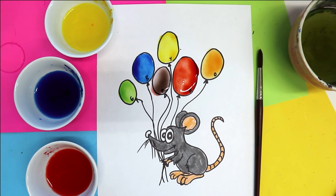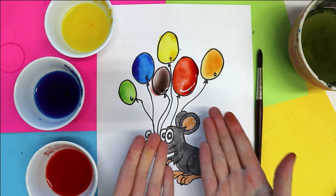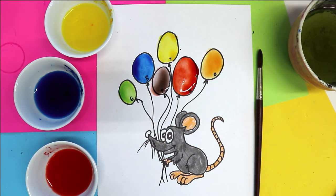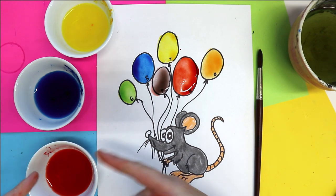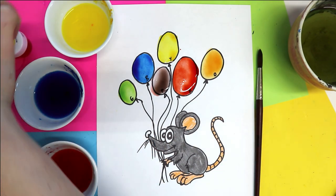My name is Mizartastic and in this tutorial we're going to use food coloring to make colors. We're going to take our food coloring, whatever you got, turn it into some watercolor paint and mix it to make secondary colors. Let's get started.